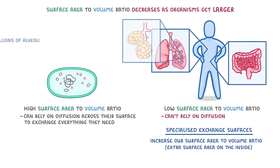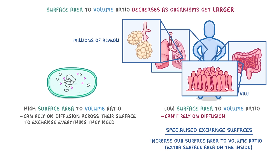For example, in the lungs we have millions of alveoli, which together give a huge surface area over which we can absorb oxygen and get rid of carbon dioxide. And in the intestines, we have villi which provide a massive surface area for the absorption of nutrients.